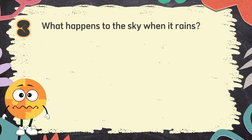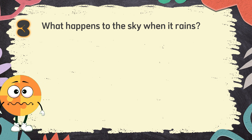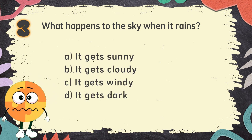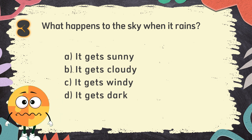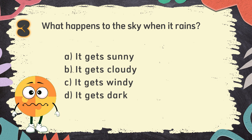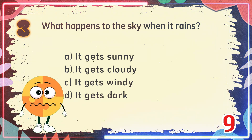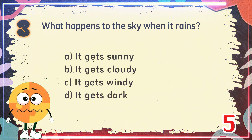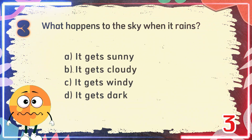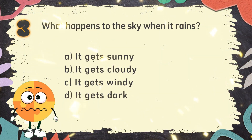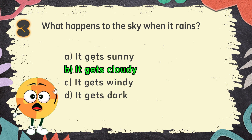Number 3: What happens to the sky when it rains? The choices are: A. It gets sunny, B. It gets cloudy, C. It gets windy, D. It gets dark. The correct answer is B. It gets cloudy.